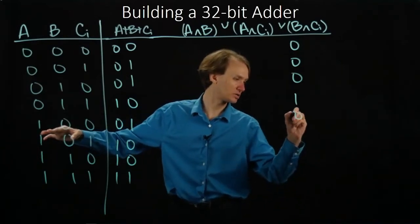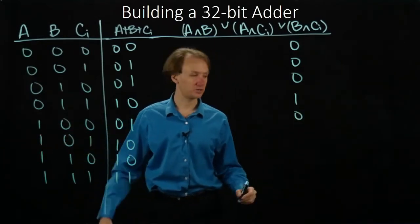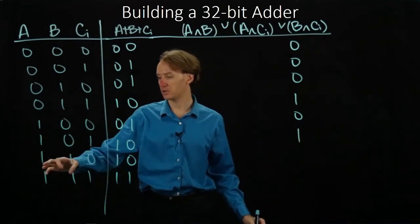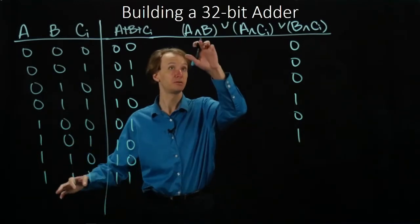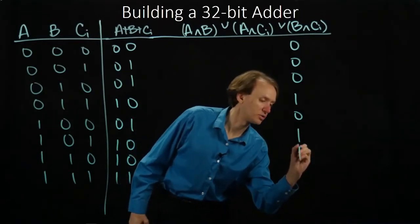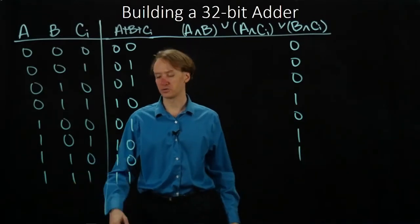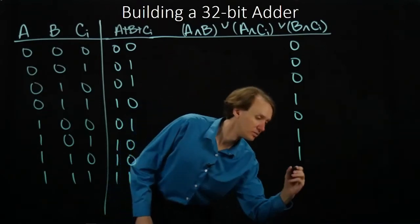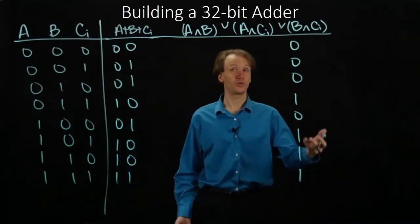Back down to one input. I've got two: A and carry-in. Here I've got A and B, so that will also be one. And here all three are true, so all three of these conjunctions would be true. But the result is still just true.